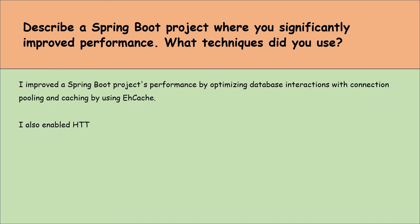What does it mean that Spring Boot supports relaxed binding? Spring Boot relaxed binding means it's flexible in how properties are defined in configuration files. This flexibility allows us to use various formats for property names. For example, if we have a property named server.port, we can write it in different ways like server.port, server-port, or SERVER_PORT, and Spring Boot understands these as the same property. This feature is especially helpful because it lets us adapt to different environments or personal preferences without changing how we access these properties in code, making Spring Boot configuration more tolerant to variations.